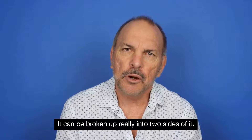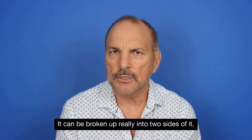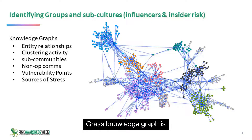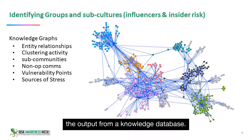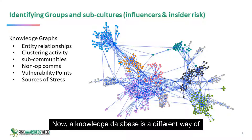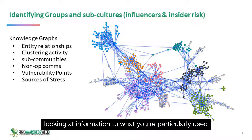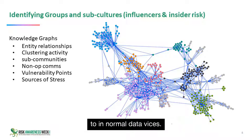It can be broken up into two sides: graphs. A knowledge graph is the output from a knowledge database. A knowledge database is a different way of looking at information compared to what you're traditionally used to in normal databases.